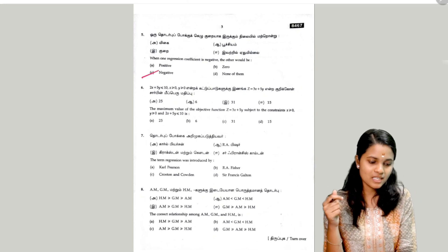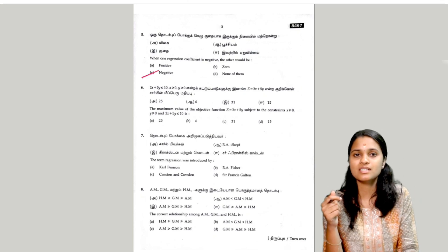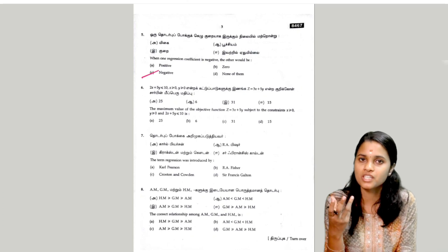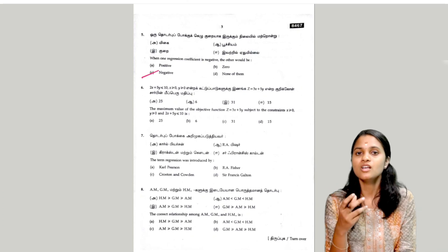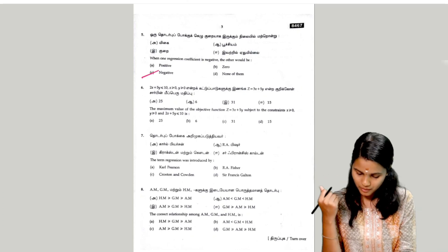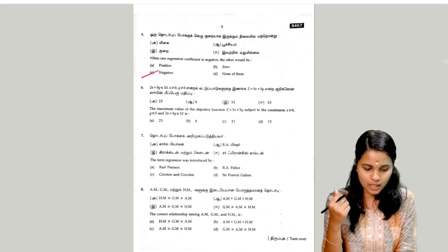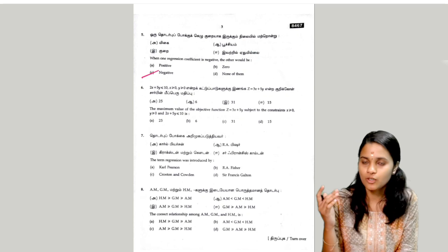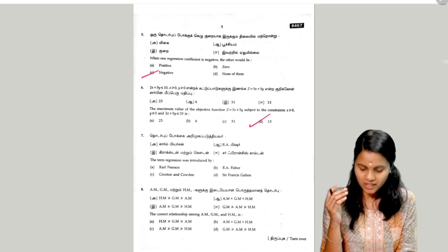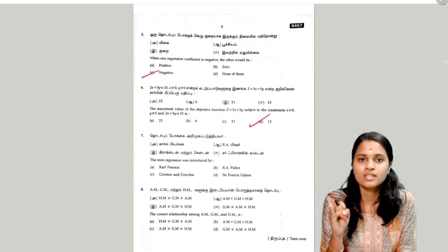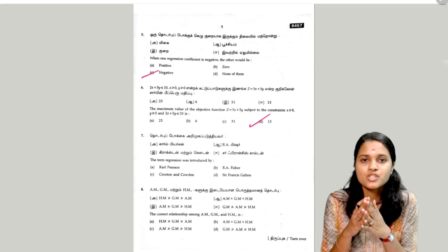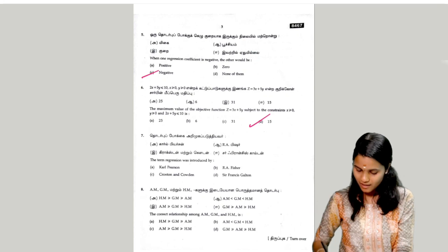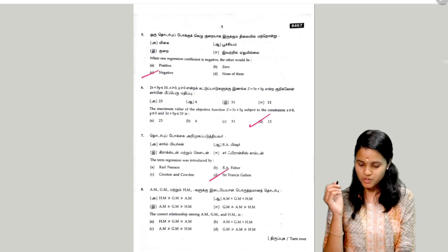The next question is the sixth question: what is the maximum value of the objective function? So the answer is option D. The next question is the term regression — the term regression was introduced by — and we have option D.